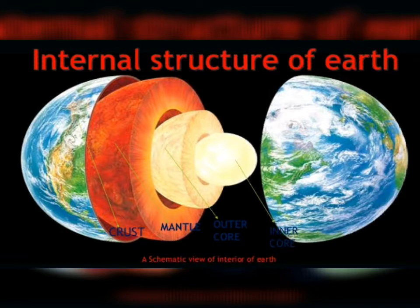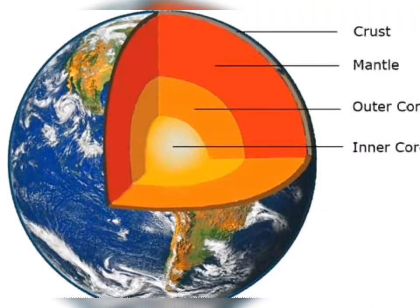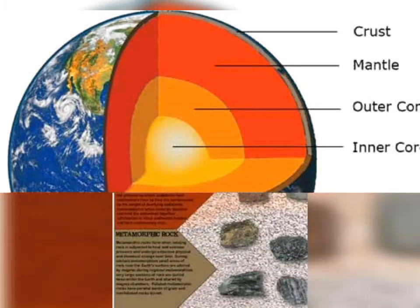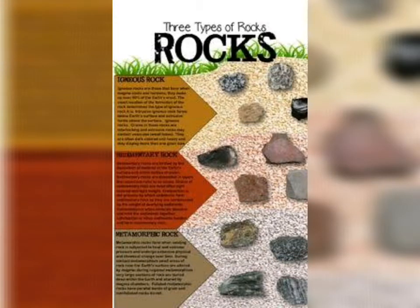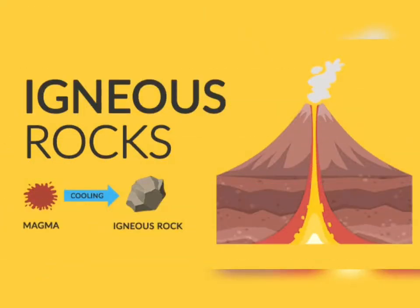Below the crust is the mantle, which is in molten form, and below the mantle is the core. The layer in which we live is the Earth's crust. The rocks on the Earth's crust have been divided into three main types of rocks. Today we will learn about igneous rocks and how igneous rocks are formed.